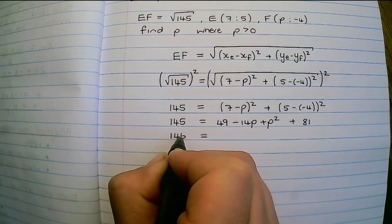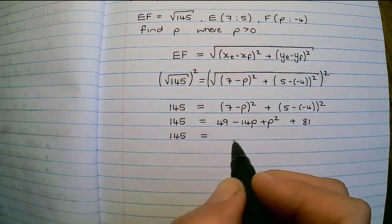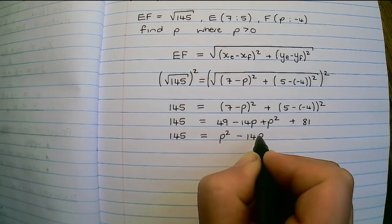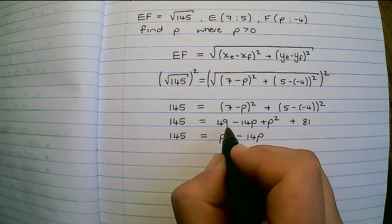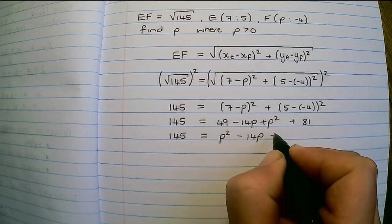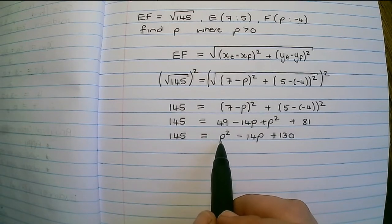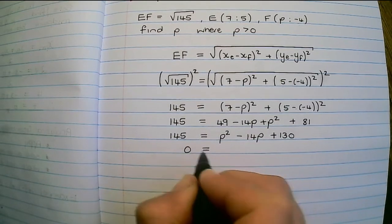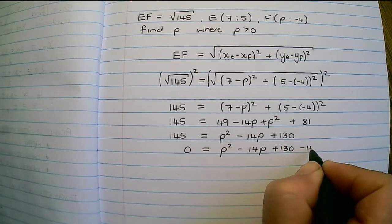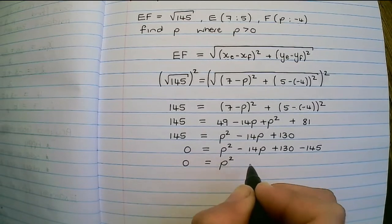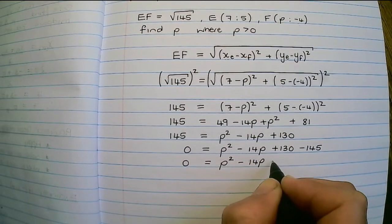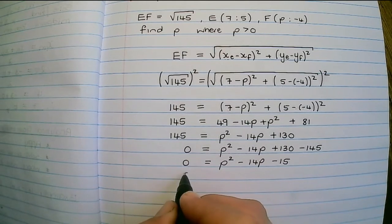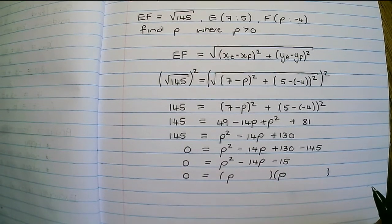Before transposing 145, I'll collect like terms. We have P squared, minus 14P, then 49 plus 81 which is 130. Note the exponents of P are written in descending order. Now transposing 145 gives negative 145 on the right, and simplifying: P squared minus 14P minus 15 equals zero. We now have a quadratic equation which we can factorize — skills learned in grade 9.